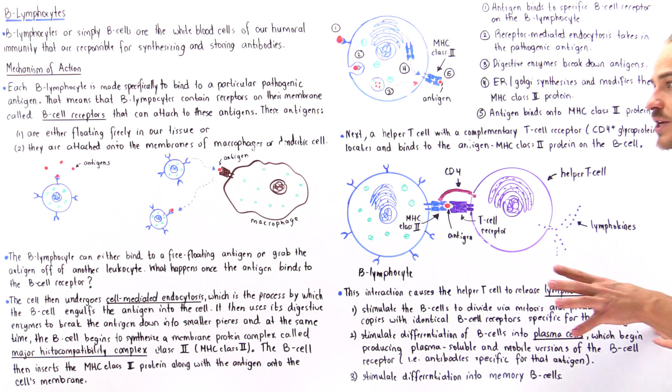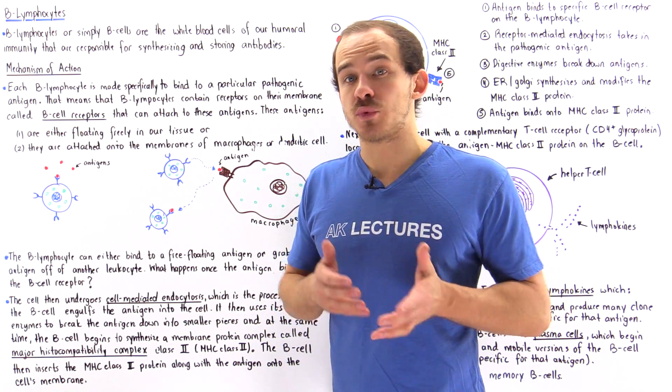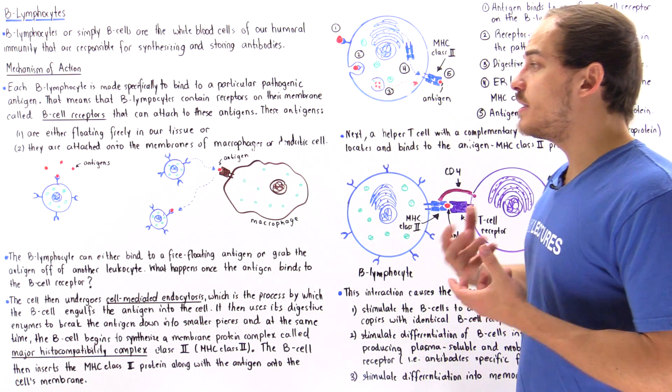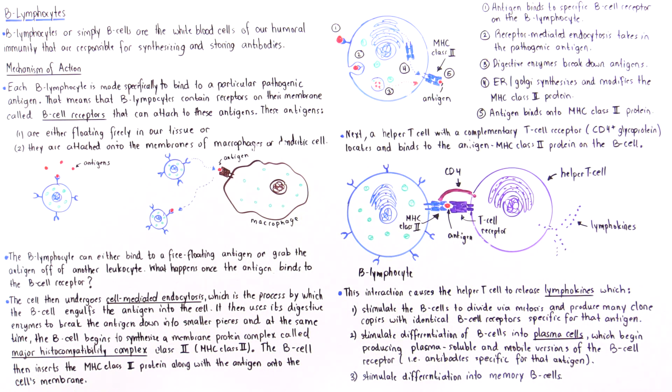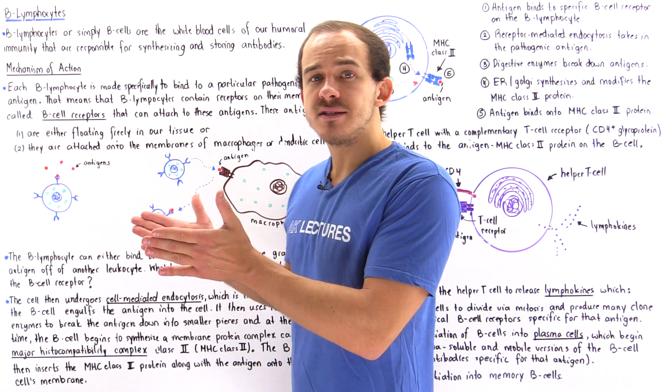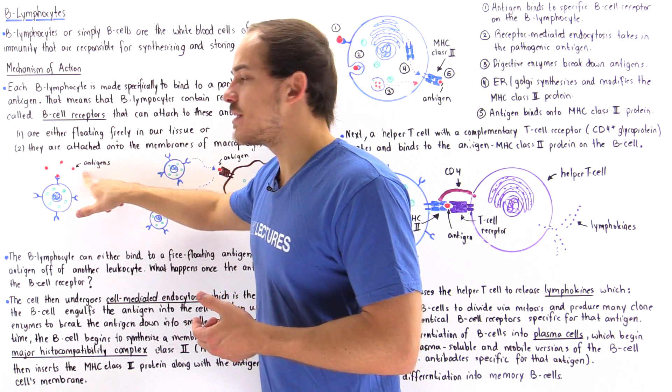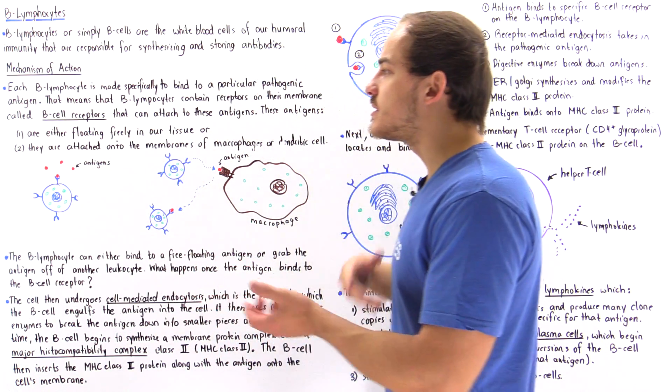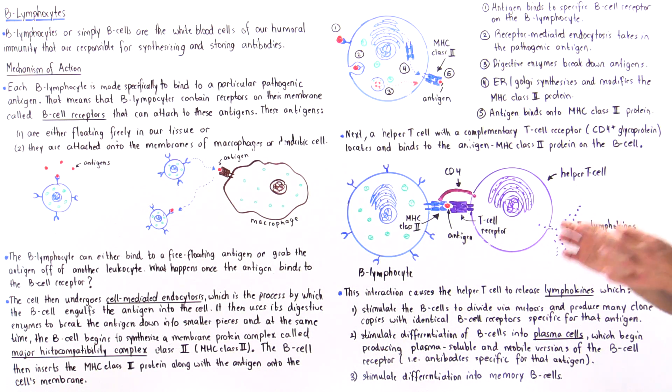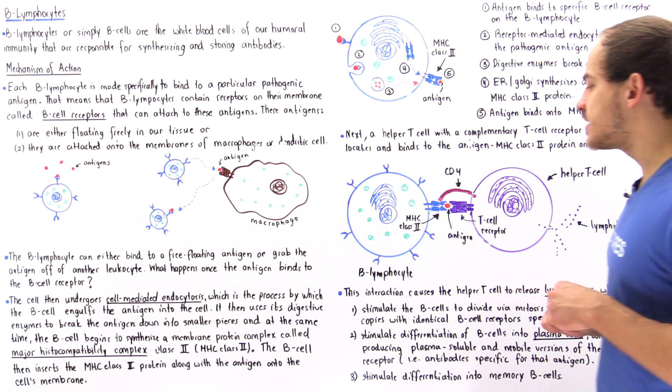Plasma cells contain highly extensive endoplasmic reticulum that can produce many antibodies. These antibodies move within our blood, lymph, and tissue, bind onto antigens, and label them for destruction by our immune system.